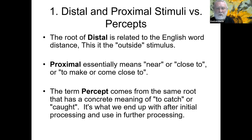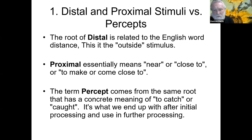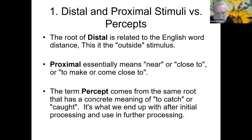We can talk about distal, proximal, and stimuli and percepts. 'Distal' relates to the stimulus at the outside or most distant. 'Proximal' means near or close to. The percept means to make concrete — it's what we end up with after initial processing and can use for further processing.